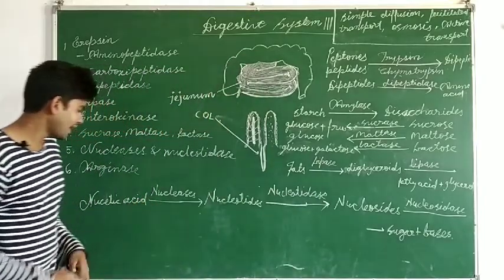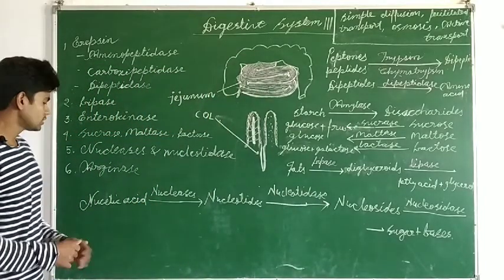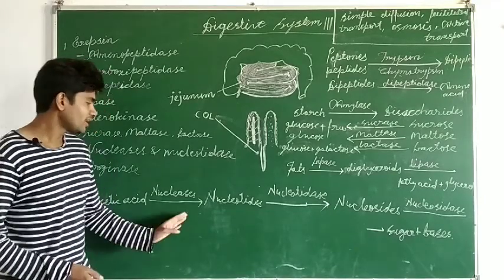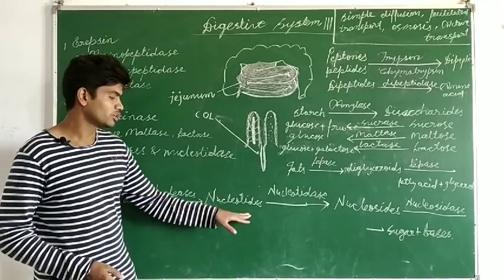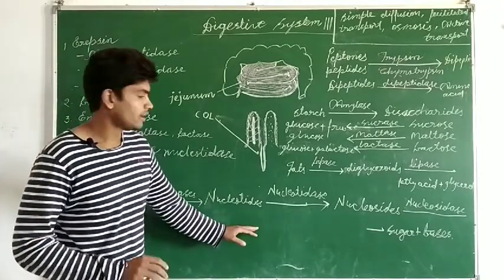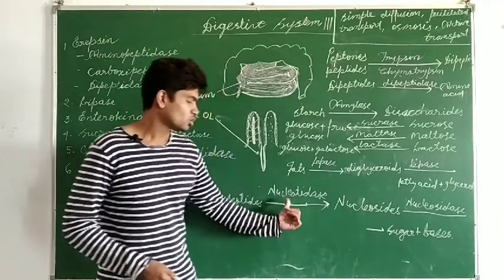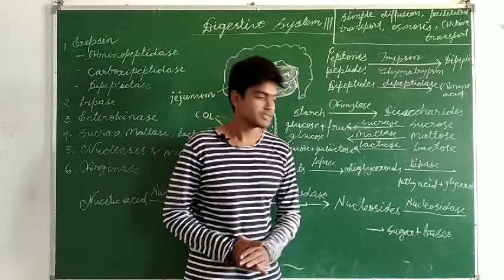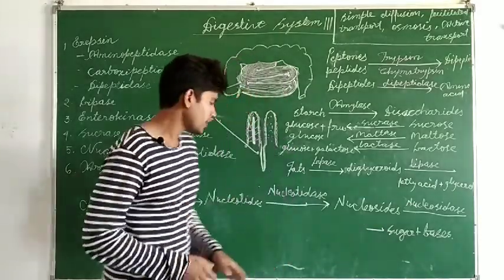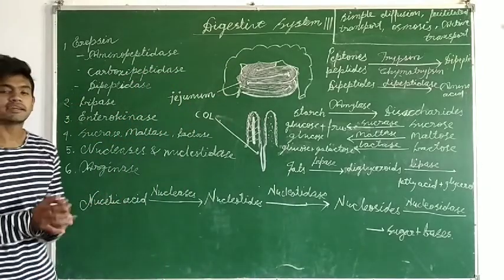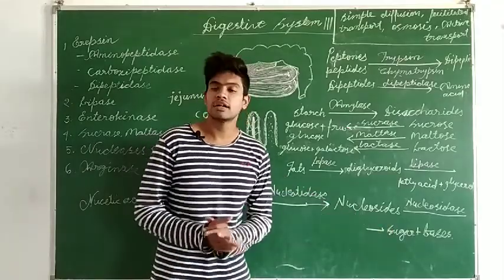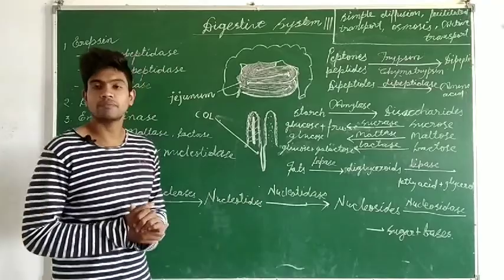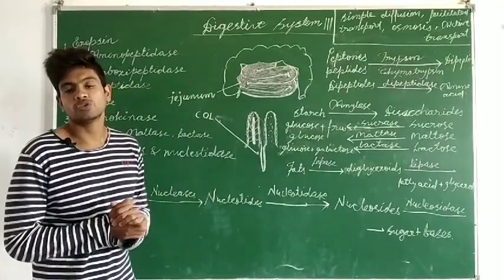For nucleic acids: they are first acted upon by nucleases and broken down into nucleotides. The nucleotides are again broken down into nucleosides by nucleotidase. Nucleosides are then broken into sugar and bases by nucleosidase. Sugar and bases are the end products of nucleic acid digestion.